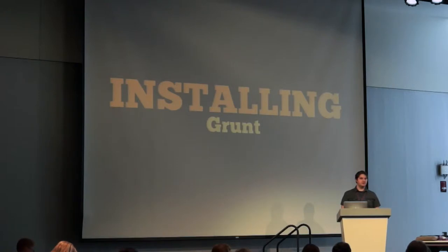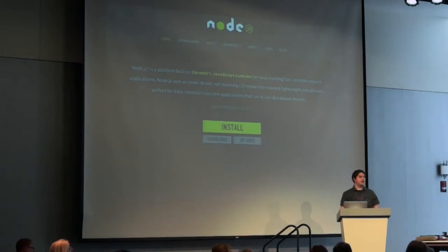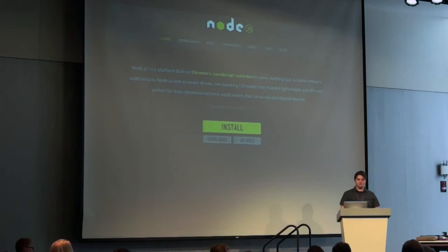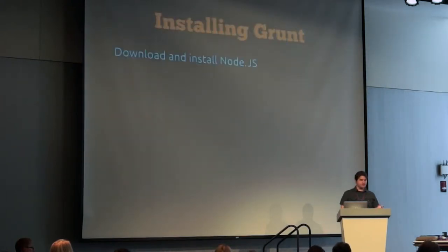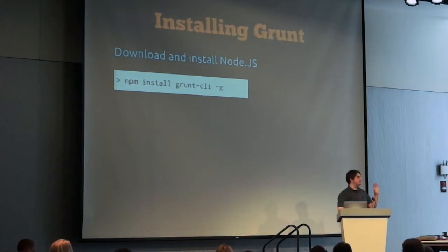Now I'm going to take you through installing Grunt on your system and configuring it for a project. This assumes you've never worked with Grunt or Node. The steps are pretty much identical for Mac or for Windows. The first thing you need to do is download and install Node.js. That just involves going to nodejs.org and clicking the green button — it's pretty much that simple. There's no command line configuration or modifying your path — it's a really straightforward process on Mac or on Windows. Everything I'm mentioning in my slides is well documented on the Grunt website, so don't worry if you miss a few of these.